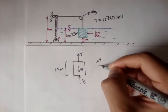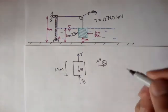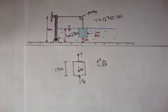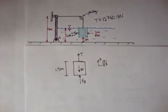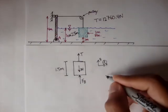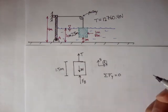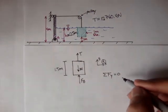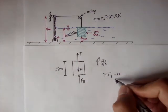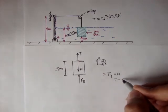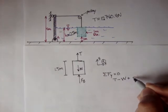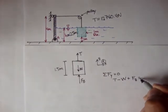And I'll say this is y, this is x, this is positive, that's just our coordinate system. So what we can do next is summation of forces in the y direction is equal to 0, in the up and down direction. So we have the tension minus the weight plus the buoyant force is equal to 0.